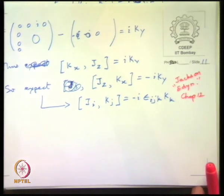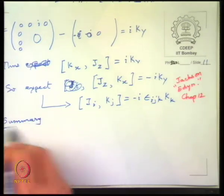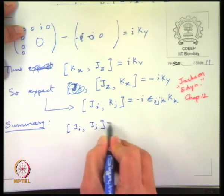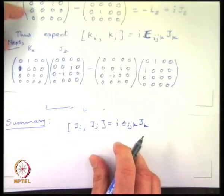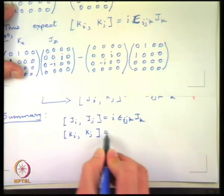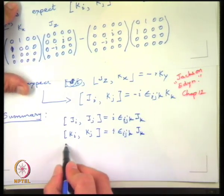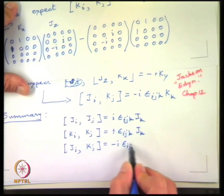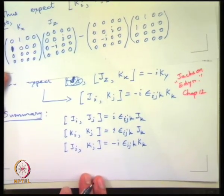So we are not doing something all that terribly exotic so far, but now let us see what is the summary. Firstly, we had the good old [J_i, J_j] = i ε_{ijk} J_k. Then we calculated [k_i, k_j] = i ε_{ijk} J_k. And finally, we had [J_i, k_j] = −i ε_{ijk} k_k. This is the total SO(3,1) algebra, or the Lorentz group algebra.